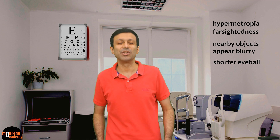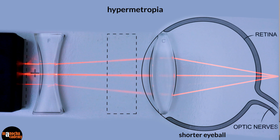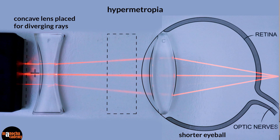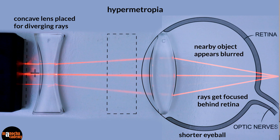Let's visualize this using our light experiment. Here I'm using an eye diagram where the eyeball is shorter than usual. A distant object gives parallel rays, but a nearby object gives divergent rays — to obtain divergent rays, we have placed a concave lens after the ray box. Since the eyeball is shorter than usual, the light entering the eye gets focused behind the retina rather than directly on it, which is why the image appears blurred. Now you can visualize why nearby objects appear blurred for a person having hypermetropia.